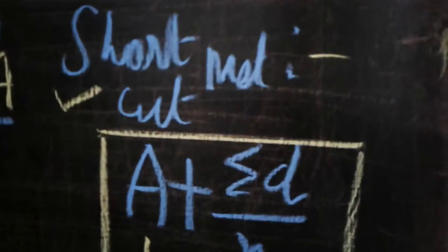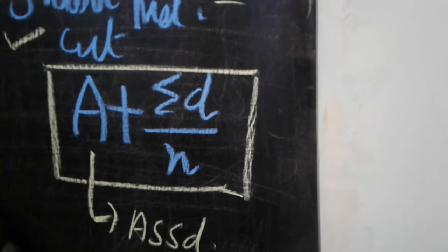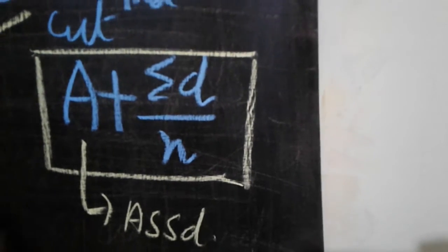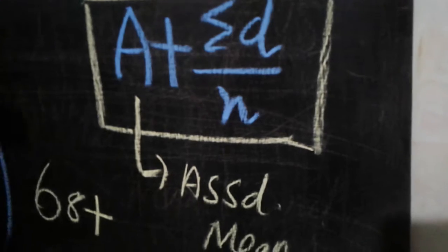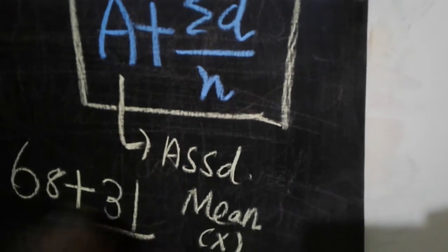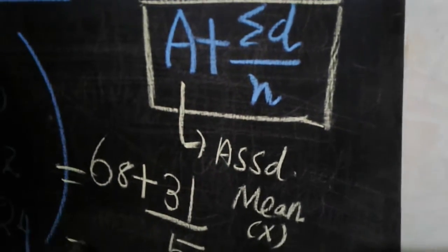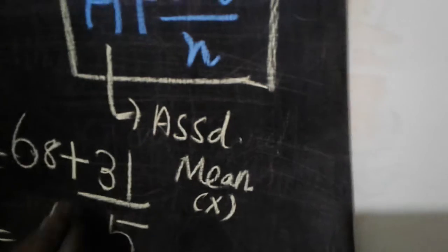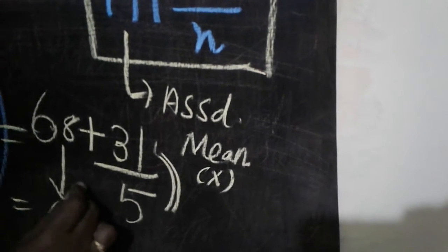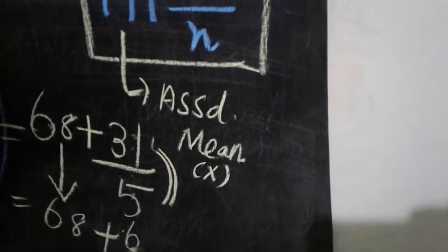That 31 is our Σd. Now we apply the formula: x̄ = a + Σd / n. Here, a = 68, Σd = 31, and n = 5 (since there are five values). So we get: 68 + 31 / 5 = 68 + 6.2.